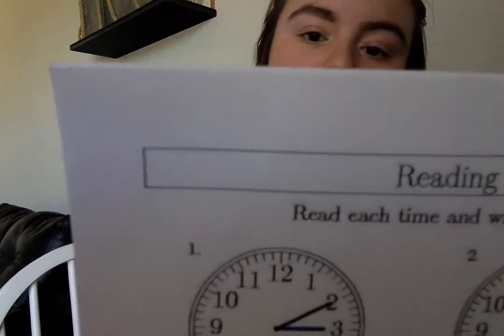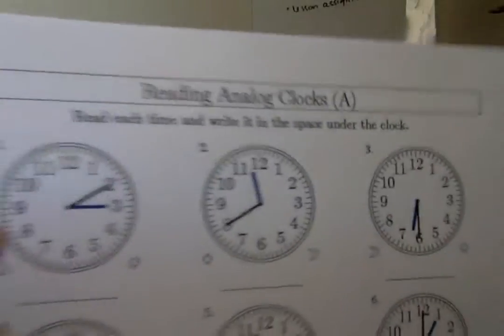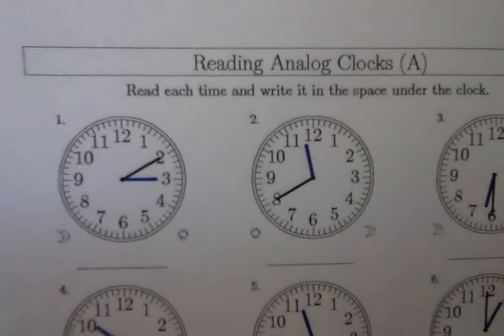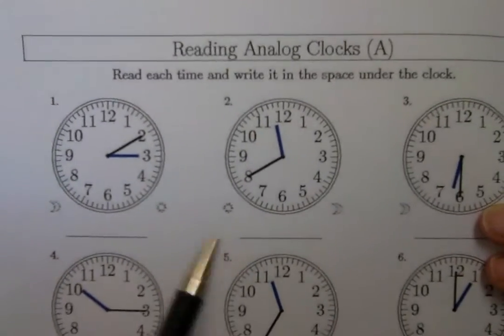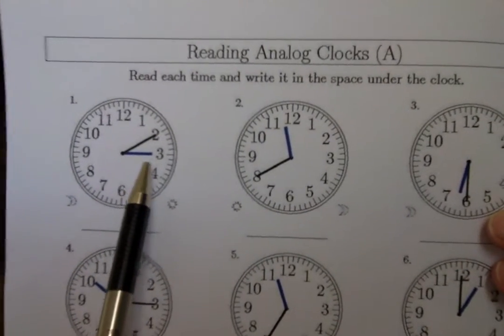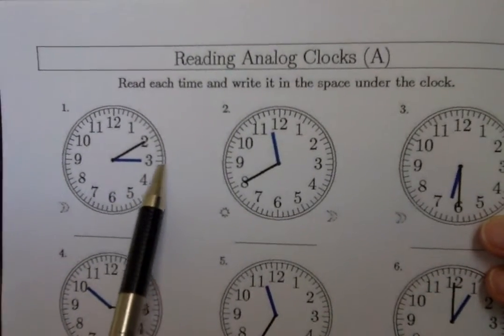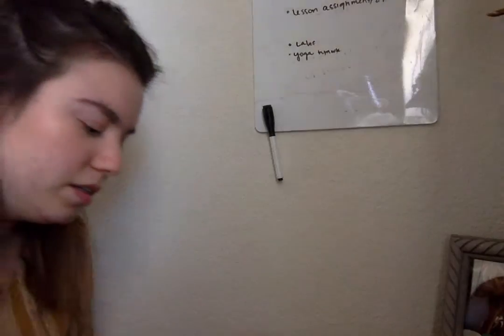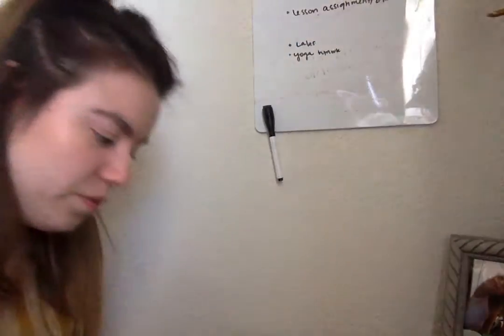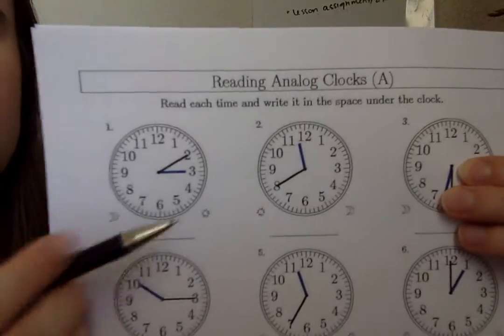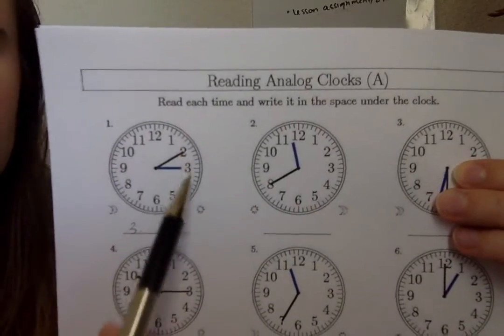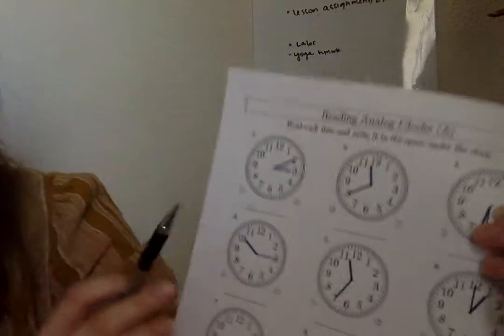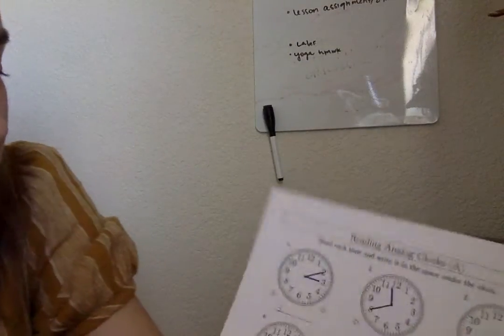So we have our first problem here. We see that the blue hand is gonna be on three, so we know we're gonna write down three. We know that's the hour, and then we're gonna follow the black hand because the black hand has our minutes.